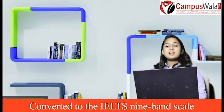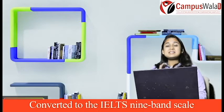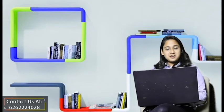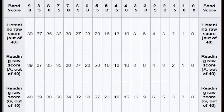Scores are reported in whole and half bands. On your screen you can see a chart that will guide you accordingly — you can easily understand the band scores, Listening raw score, and Reading raw score from this chart. You can also see the full nine-band scale on screen to understand how scores are assigned.